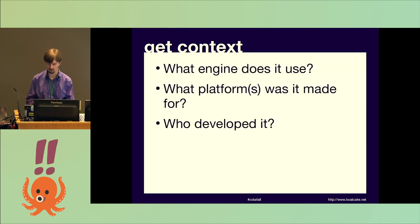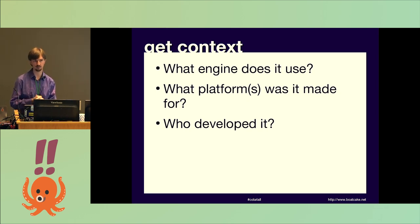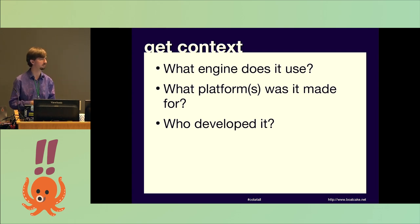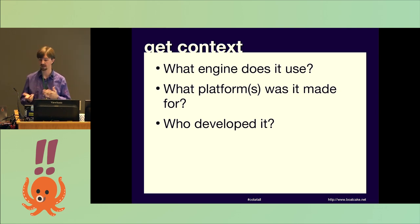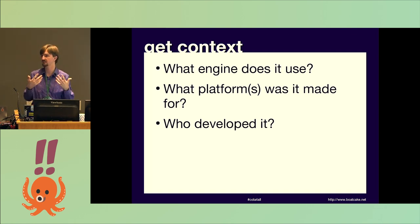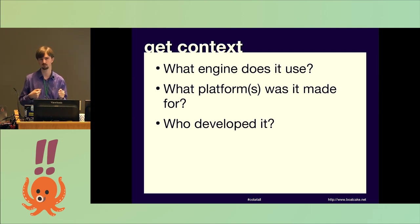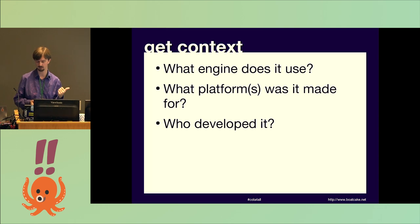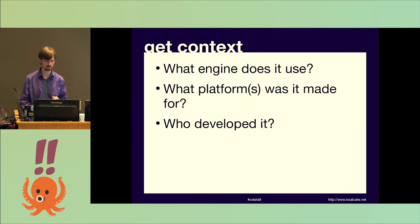So here are some search terms. Another thing you want to do while doing this work is keep in mind the context. What engine does it use is useful because engines generally use the same format — if you can look up another game using the same engine, some of the work is already done for you. What platform was it made for can determine things like endianness, which we'll get to later. And who developed it goes back to the engine point — even if they don't say they're using a specific engine, if a developer made two games in quick succession, they likely had some code in common. Also, a lot of Japanese developers at least used to use Shift-JIS instead of Unicode.